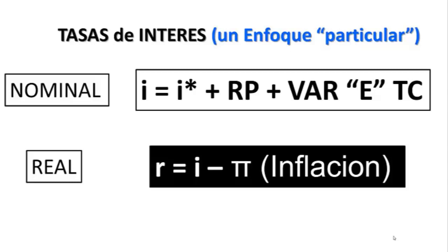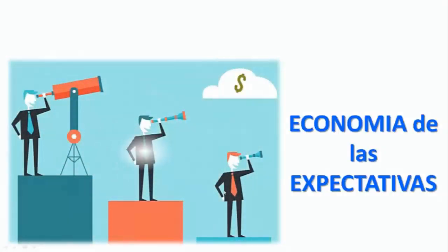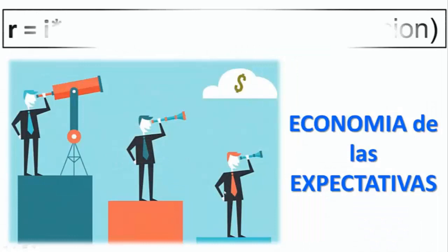Combinando ambas expresiones obtengo la expresión que aquí se indica en la cual la tasa de interés real es igual al interés que paga un bono confiable, por ejemplo Estados Unidos, más el riesgo país del país analizado, en este caso Argentina, más la variación esperada del tipo de cambio nominal, restándole la inflación.